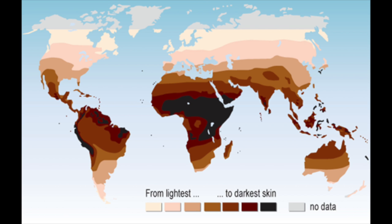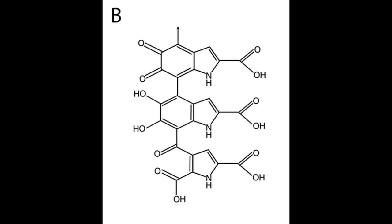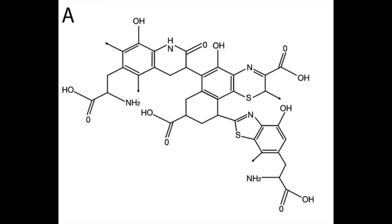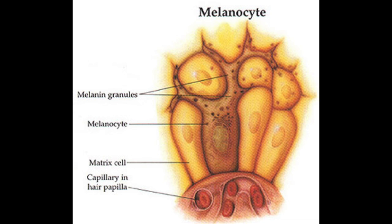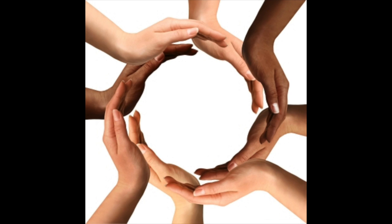Melanin comes in two forms, eumelanin and pheomelanin. Eumelanin is brownish-black and absorbs UV rays better than the reddish-yellow pheomelanin that creates freckles and red hair. Melanin is produced by melanocytes at the bottom of the epidermis when skin cells are damaged. Today, most people have the same amount of melanocytes, but vary in their amount of melanin.